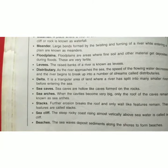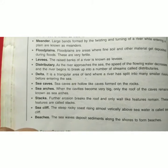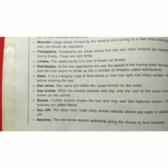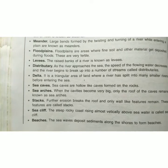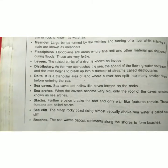Sea caves are hollow-like caves formed on rocks. Sea arches — when the cavities become very big, only the roof of the caves remains, which is known as sea arches. Stacks — further erosion breaks the roof and only wall-like features remain; these are called stacks. Sea cliffs — the steep rocky coast rising almost vertically above the sea water is called a sea cliff. Beaches — sea waves deposit sediments along the shores to form beaches.